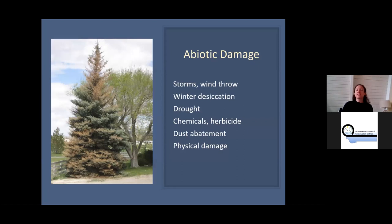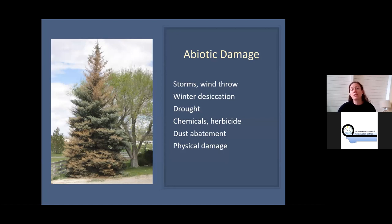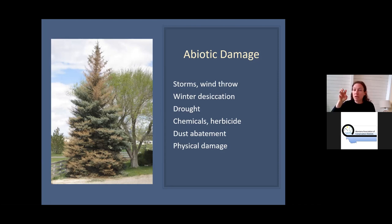There's also a lot of other things that can look like insects and diseases: storms, windthrow, winter desiccation, and drought — I've been seeing drought impacts where people assume root disease or bark beetle but it's just high soil temperatures. Chemical damage in the roots can spiral up and look like a barber pole; herbicide injury can show up as needle curling. Magnesium chloride used for dust abatement can be pretty damaging when taken up by tree roots. Physical damage — tying hammocks, signs, or fences to trees — can also be quite damaging.